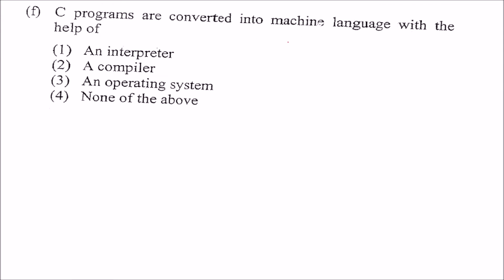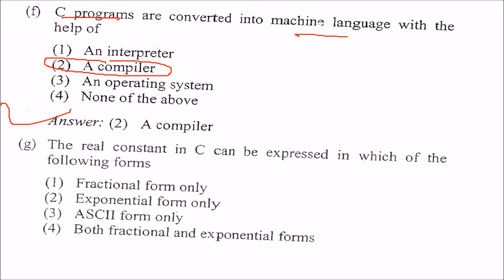C programs are converted into machine language. This is not the question of only C programs. Any program. Any C, Java or you take any of these. This will be converted into machine language by a compiler. That language compiler. So, the answer will be compiler. Next is the real constant in C can be expressed in which of the following form. It can be expressed in the fractional as well as exponential form. It depends on how big the number is. So, both fractional and exponential forms. This is the answer.